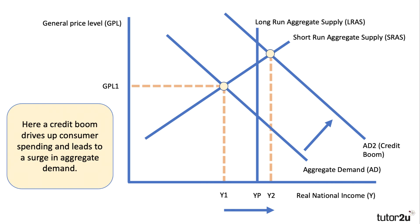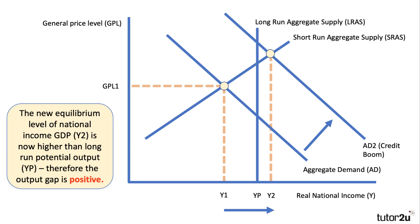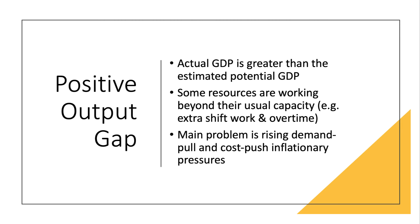You can also have a positive output gap. In this diagram, starting at Y1, a big increase in aggregate demand — perhaps driven by a credit boom, a surge in mortgage lending and consumer loans driving up consumer spending — takes the level of national income to Y2 in the short term, which lies above the economy's potential output YP. Now we have a positive output gap: the economy is booming, inflationary pressures build, and unemployment falls.